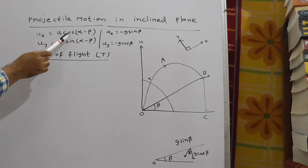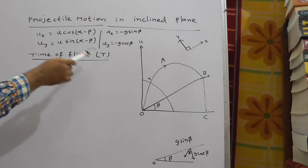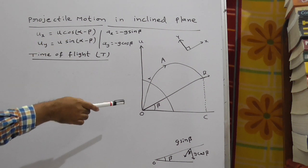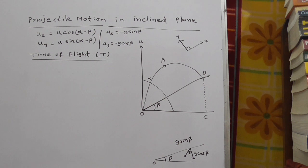In general, ux equal to u cos alpha, uy equal to u sin alpha. But here it is the projectile motion in inclined plane. Therefore, you can find some change in angle.